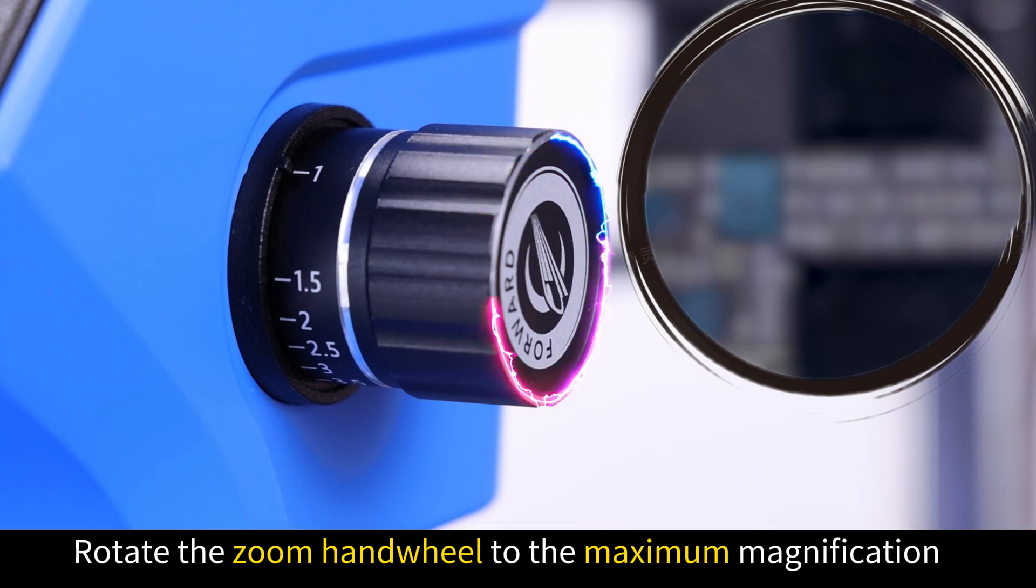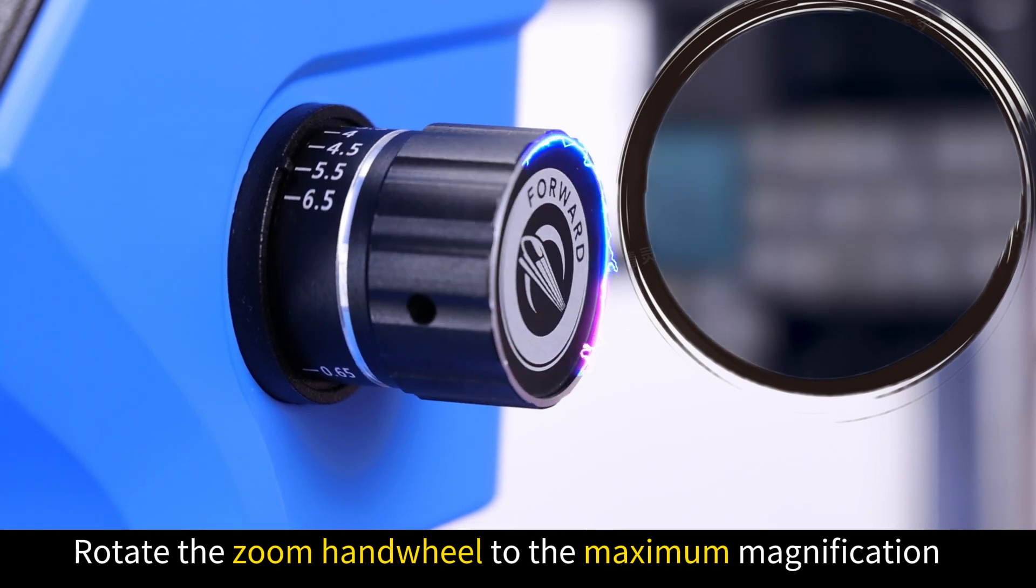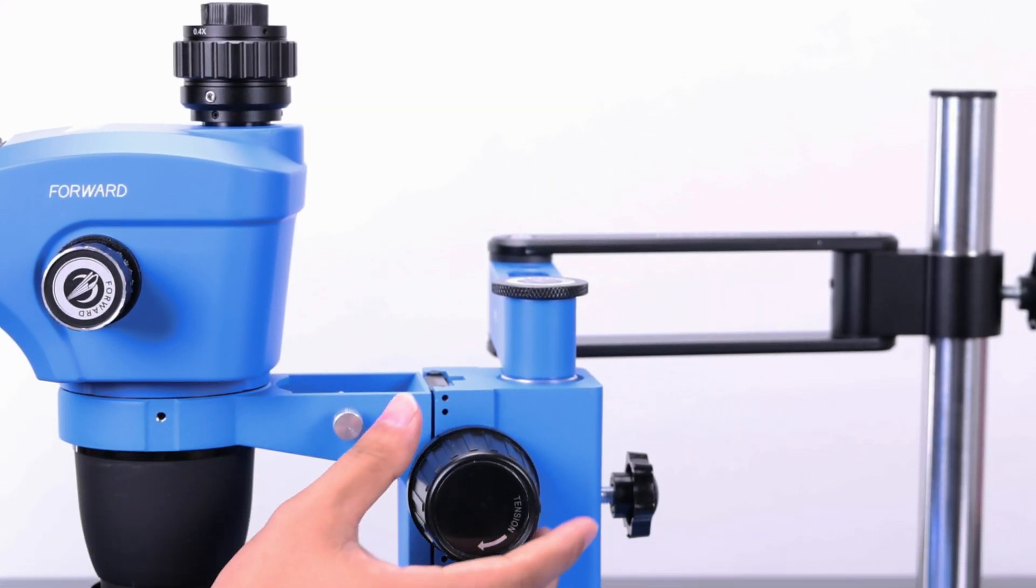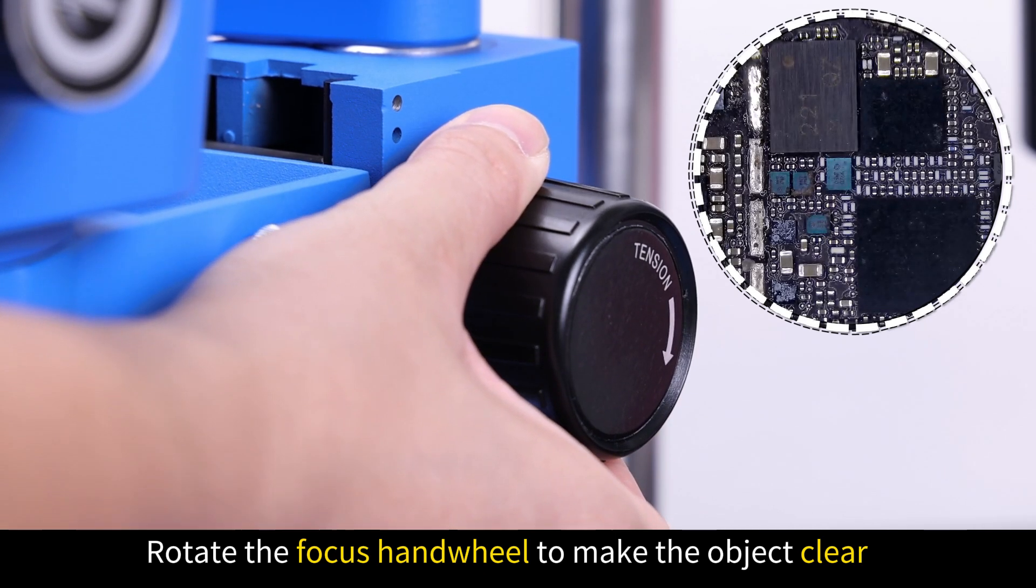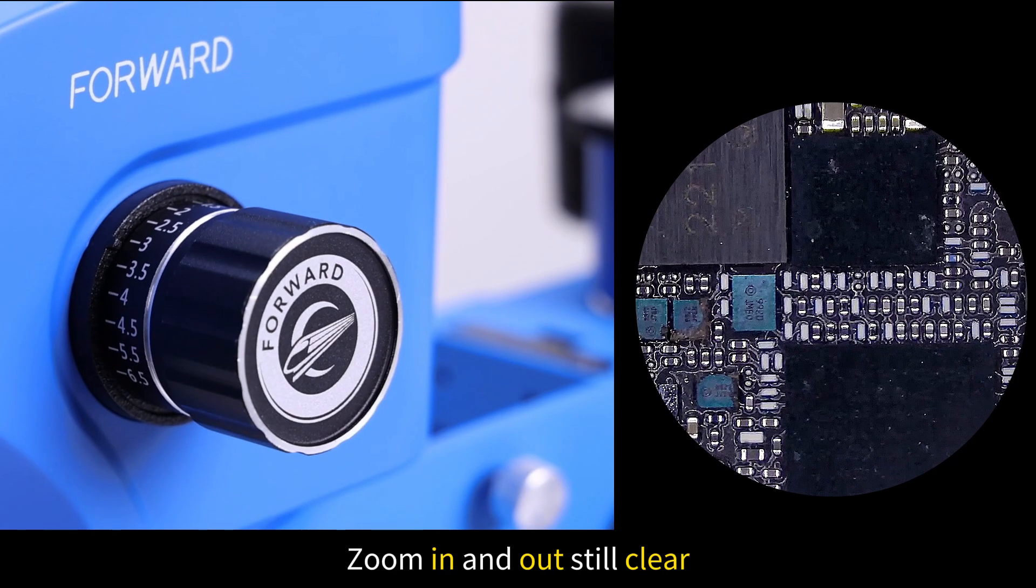Rotate the zoom handwheel to the maximum magnification. Rotate the focus handwheel to make the object clear. Zoom in and out still clear.